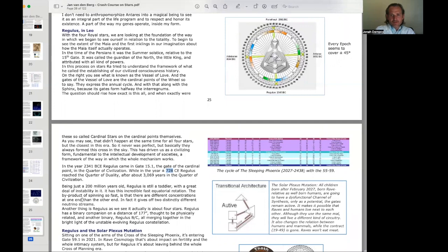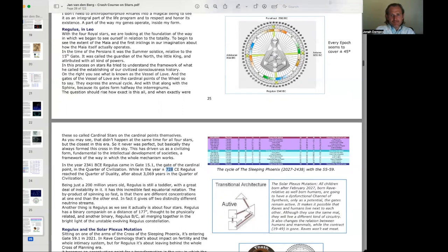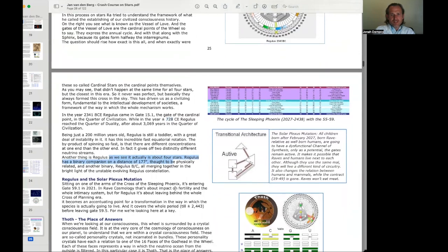Being just 200 million years old, Regulus is still a toddler, with a great deal of instability in it. It has this incredibly fast equatorial rotation. The byproduct of spinning so fast is that there are different concentrations at one end than the other end. In fact, it gives off two distinctly different neutrino streams. Another thing is Regulus, as we see it, is actually about four stars. Regulus has a binary companion in a distance of 177 seconds. Thought to be physically related in another binary, Regulus B and C.